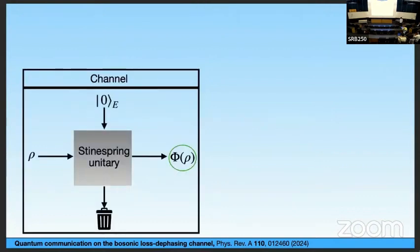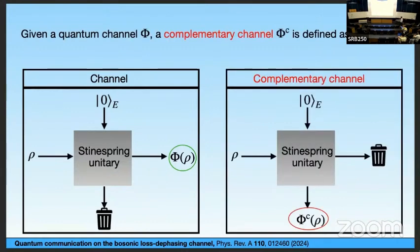Let's recall some preliminaries. Given a quantum channel, you can always associate a Stinespring representation: you couple the input state with a Stinespring unitary applied to an environment state, and tracing out the environment gives the channel. Instead, if you trace out the system output, you obtain the complementary channel — the channel that maps the input of the system to the output of the environment.